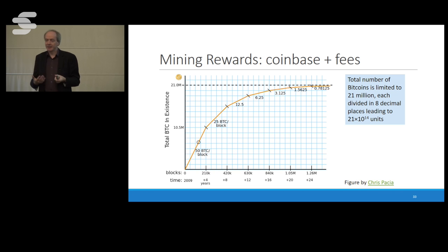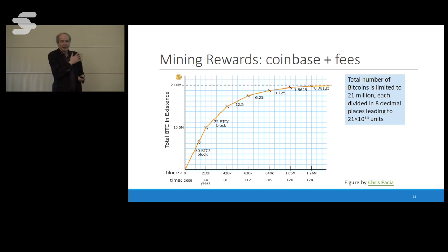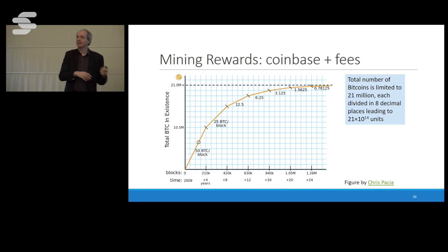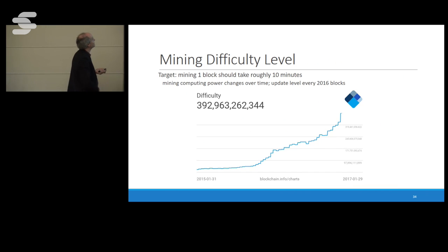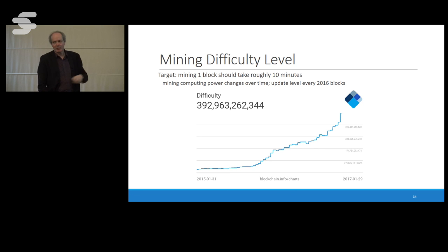The question about the difficulty level was a very good question. You can track here how it changed — I only show up to 2015. Currently this represents approximately 71 zero bits. You can translate the difficulty number by some computation — I don't know why they made it so difficult to convert. But you see it keeps going up.